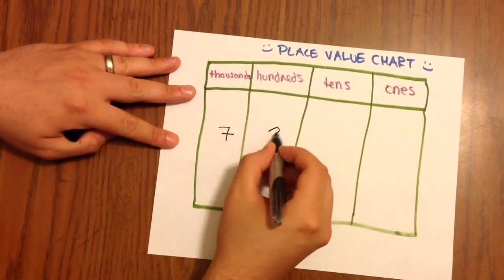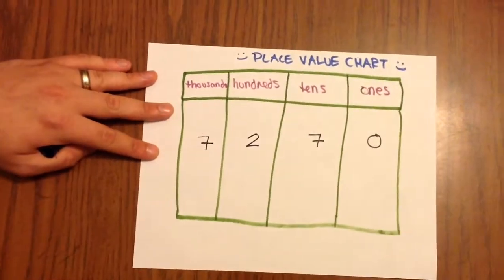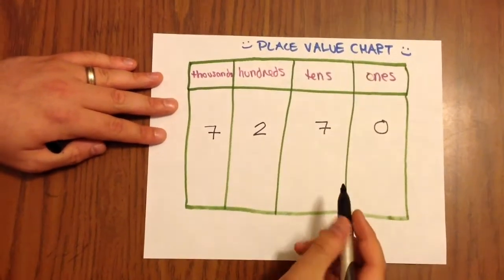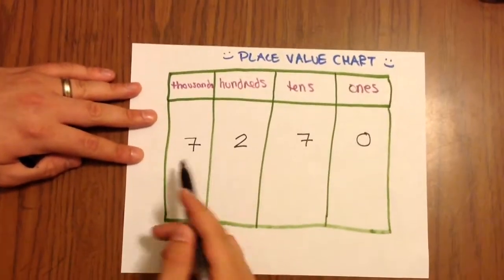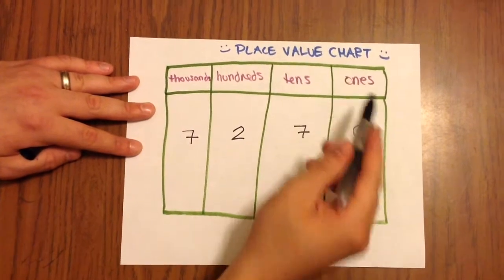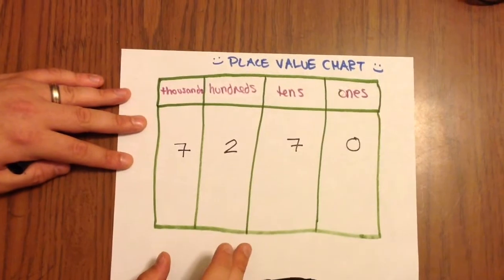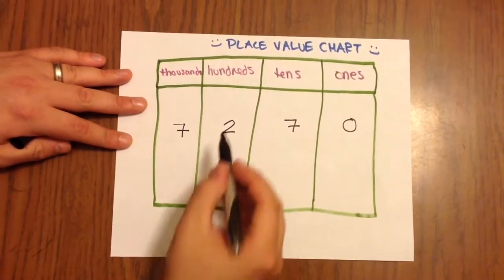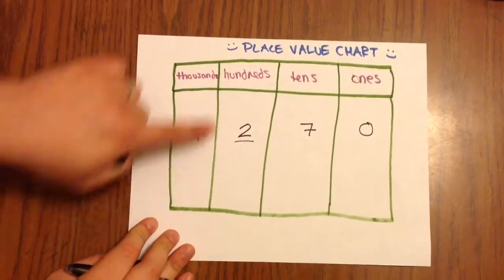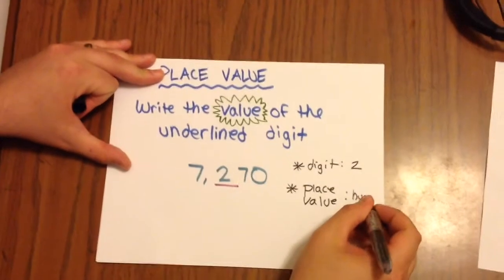So I have a 7,270 here. Okay, so our place value chart right here is really helpful keeping our digits organized so we can see really quickly what place value those digits are in. Okay, so remember that the underlined digit was this 2 here. And you can see that it's in the hundreds place. So if we go back over here, our place value is hundreds place.